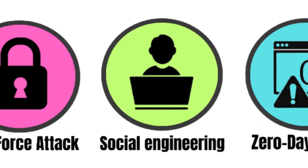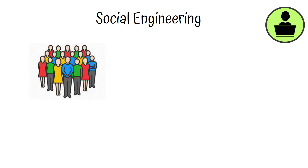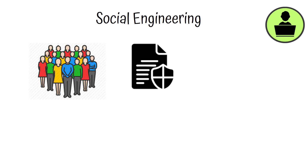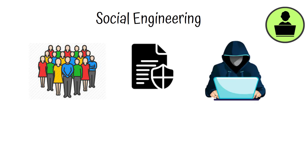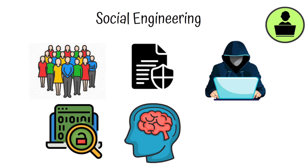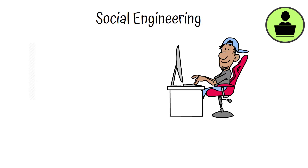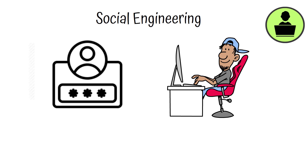Social engineering manipulates people into divulging confidential information. Hackers exploit human psychology rather than technical vulnerabilities, often posing as legitimate individuals or authority figures to trick users into revealing sensitive information, like passwords or security answers.